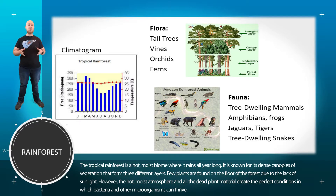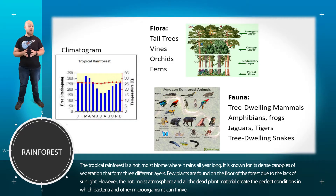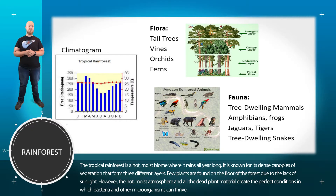As far as animal communities, you are going to find quite a bit of tree-dwelling mammals — of course, because there's a whole bunch of trees — but you're also going to find a whole bunch of amphibians, especially frogs. You're going to find some ground predators like jaguars, and you might find some larger herbivorous mammals as well.